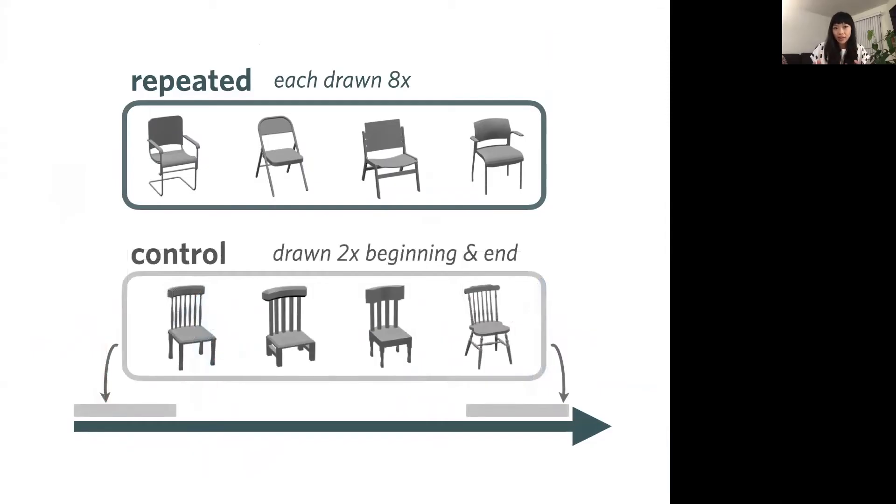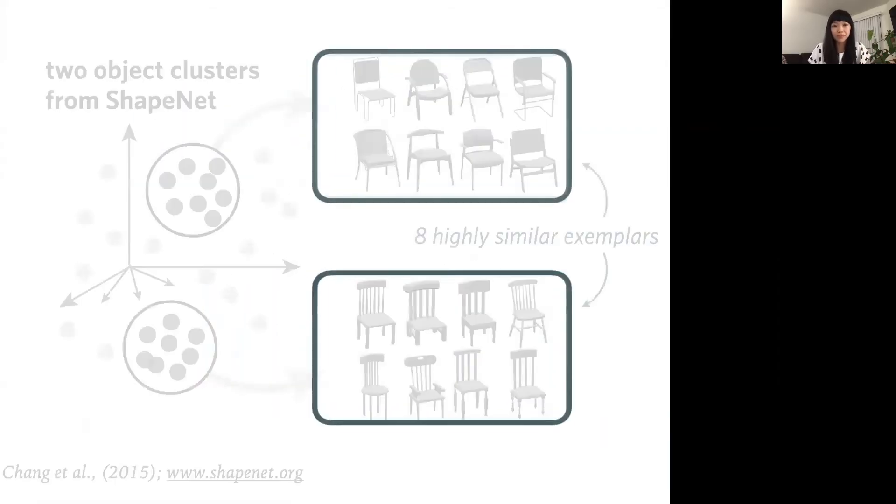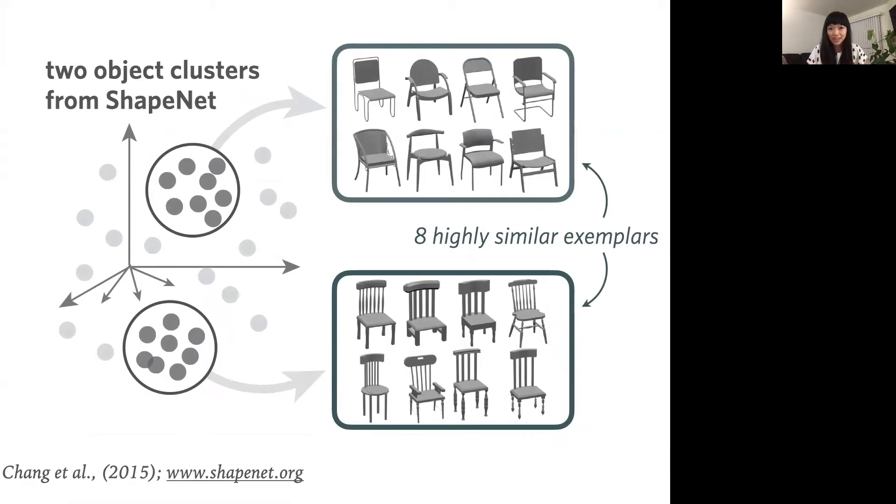Now, in order to disentangle the effect of repeated reference per se from general task practice effects, we also included a second set of control objects, which were drawn only once at the beginning and end of their interaction. You might have noticed that each set of objects consisted of highly similar exemplars. We deliberately sampled these sets of objects in such a way that it'd be initially challenging for participants to produce an informative sketch that contrasted the target from the distractors. We targeted one of the most densely populated object classes within the ShapeNet 3D object database, and then applied clustering over their visual features to derive two sets containing eight objects each, which we then randomly assigned to condition and pair.